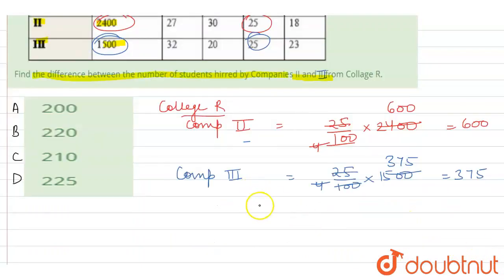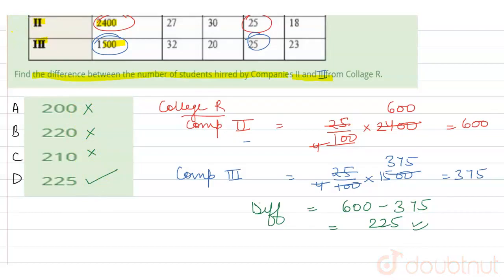Now, what do we want to do? The difference. The difference gives us 600 minus 375, that is 225. This is the correct answer. Now, looking at the options A, B, C, D, option D 225 is the correct answer. Thank you.